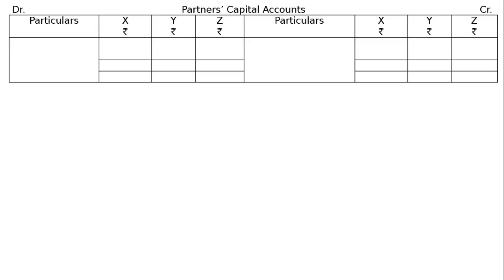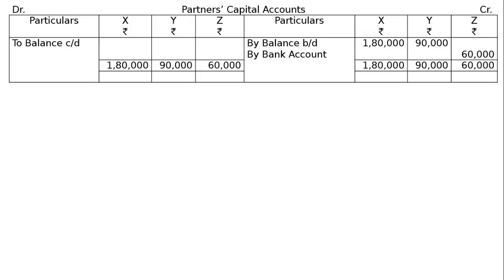Partners' capital accounts for X, Y and Z. There are two types of accounts: capital and current. In the capital account, balance brought down for X is Rs. 1,80,000 and for Y is Rs. 90,000. Z brings in Rs. 60,000 as capital by cheque — debit bank account. Balances carried down: X Rs. 1,80,000, Y Rs. 90,000, Z Rs. 60,000.